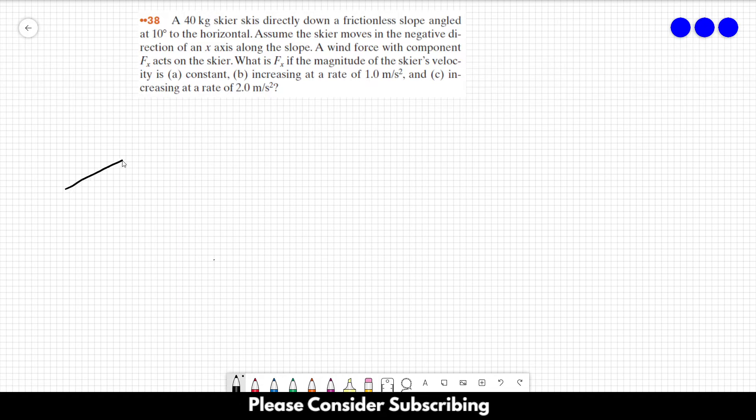So let's think that this is our slope over here. We know that this angle over here is 10 degrees. We also know that our coordinate system is like this. This is x and this is y. And let us draw our skier. Our skier is just a box because it's simpler this way.